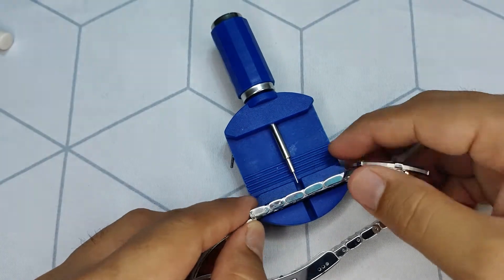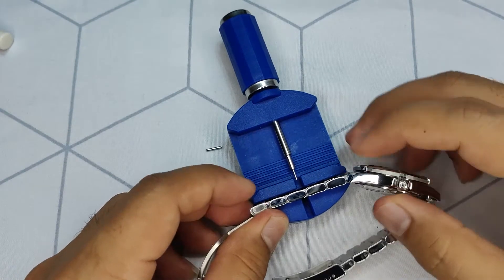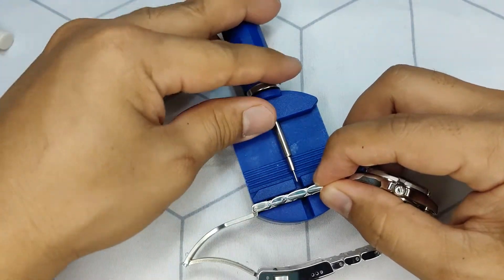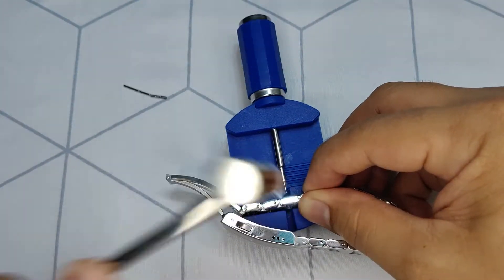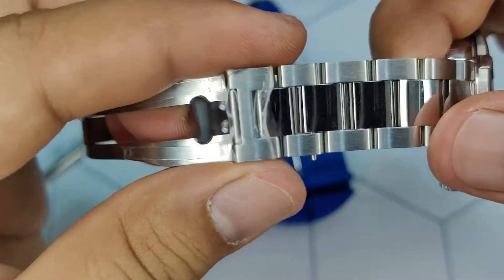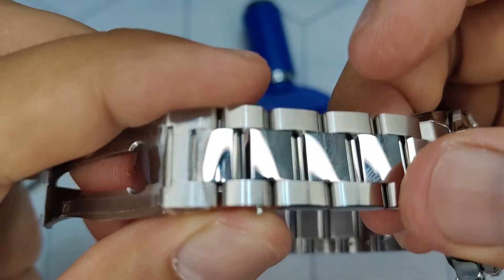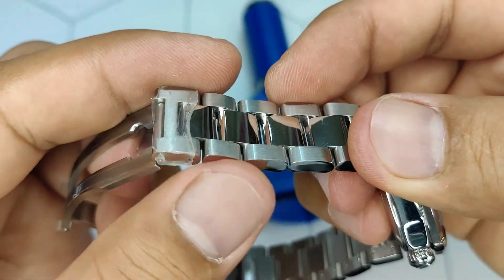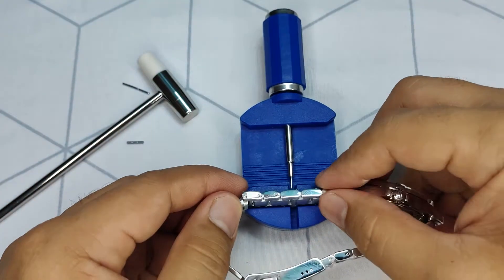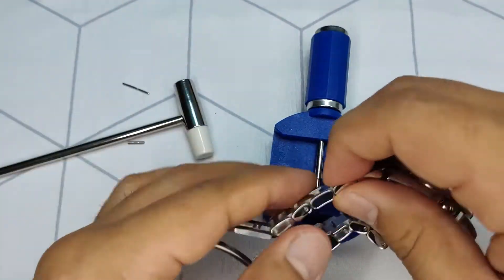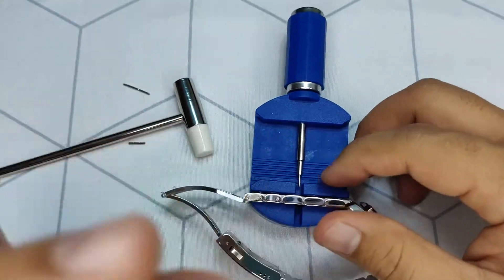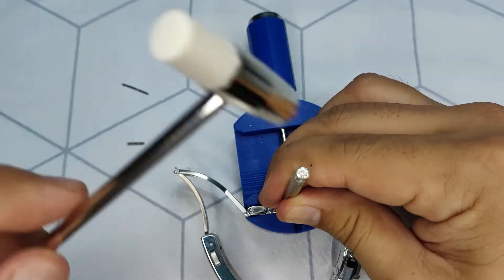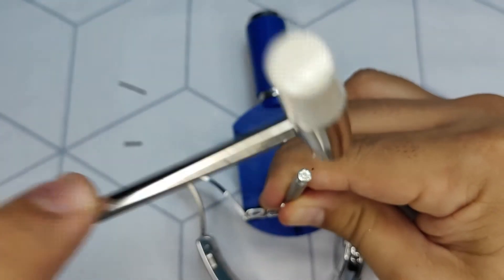For easier assembly, secure the watch on the plastic tool or a watch block if you got one and continue hammering. Use the pin pusher to make sure that pin is totally sunk in the pin slot and secure.